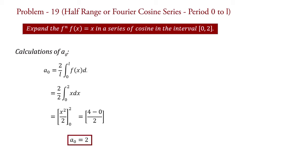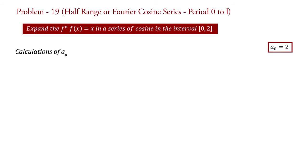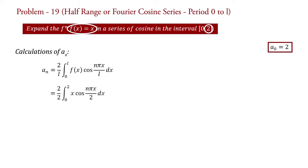Now for an: the formula is an = (2/L) integral from 0 to L of f(x) cos(nπx/L) dx. Substituting f(x) = x and L = 2, we get an = (2/2) integral from 0 to 2 of x cos(nπx/2) dx. The 2s cancel, so an = integral from 0 to 2 of x cos(nπx/2) dx.